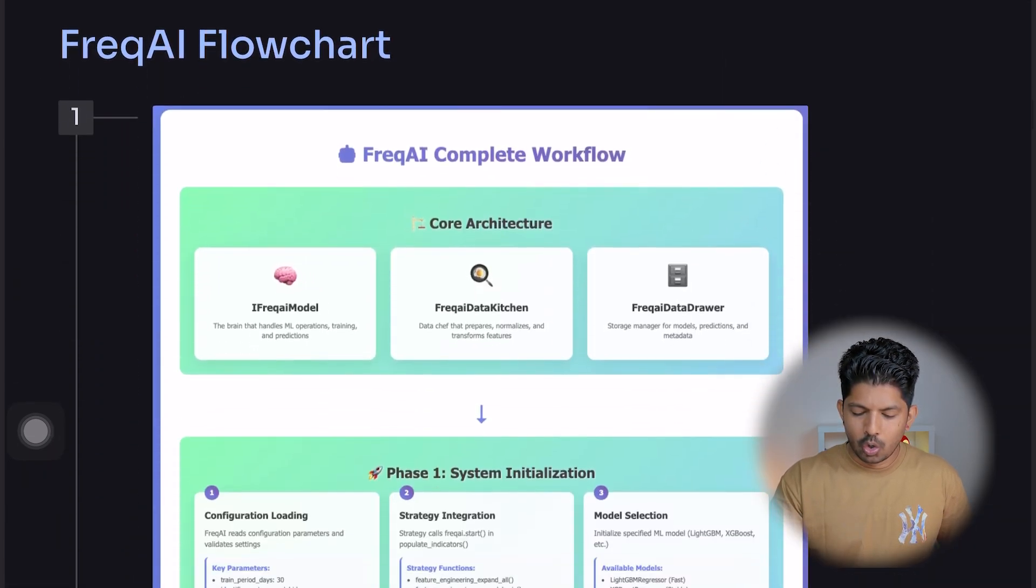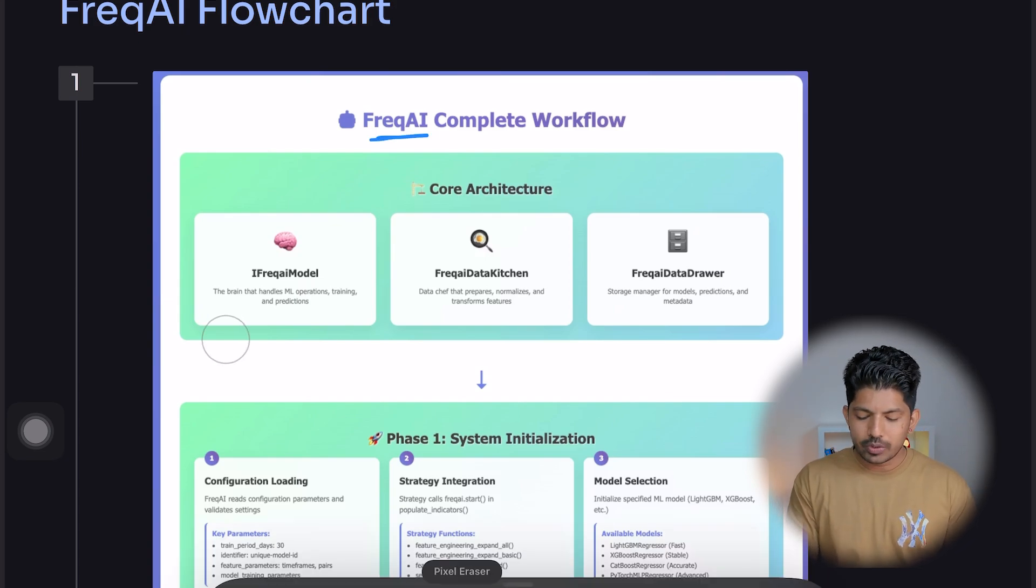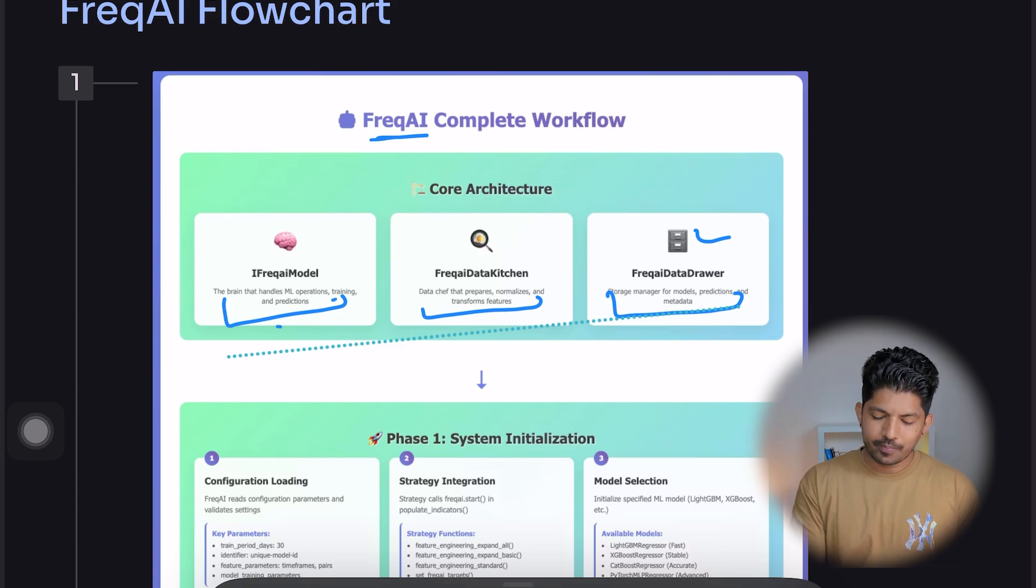Now let's understand the FreqAI workflow—how does this work? In AI and machine learning theory, these are known as black boxes. We do not know what is happening inside, but if we have basic clarity on how this model is working, we'll be more interested and curious to know more. In FreqAI, mainly we have three components: first is FreqAI Model, which is the brain that handles all the ML operations—the training and the predictions. Then we have FreqAI Data Kitchen, which prepares, normalizes, and transforms features. Then we have FreqAI Data Drawer, which is the storage manager for models, predictions, and metadata.